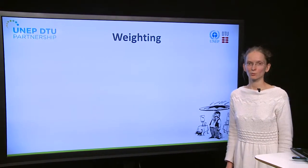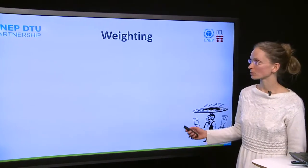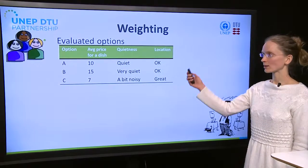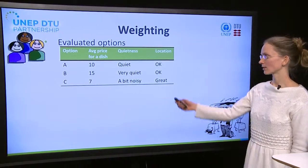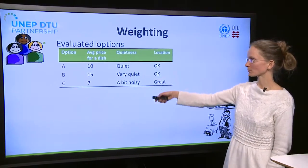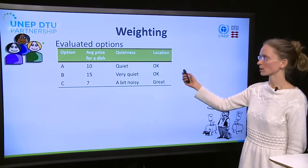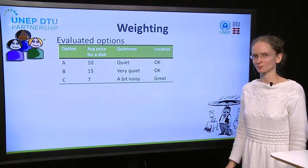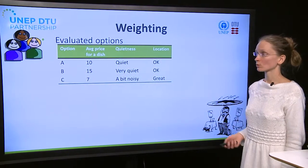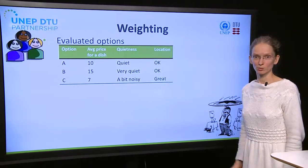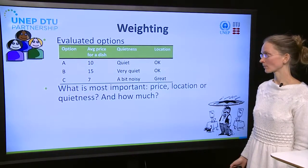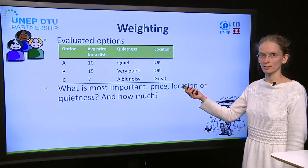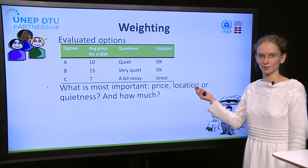So what is weighting all about? We will discuss this using the friends example again. The friends have evaluated their restaurant options and they have some prices, some levels of quietness, and the location. But from this table it is not obvious which option is the best, because it depends on which of these criteria is most important to you — the price, the location, or the quietness. And for different friends, it might have different importance as well.